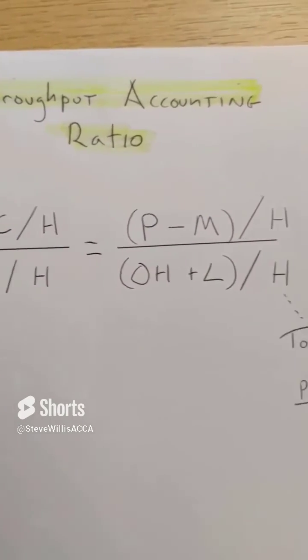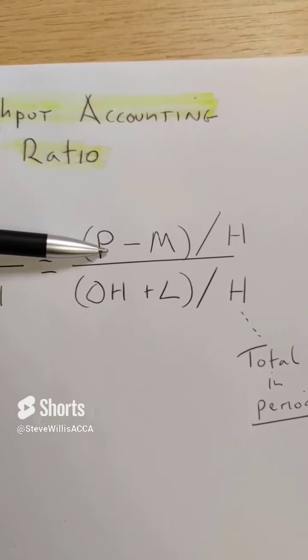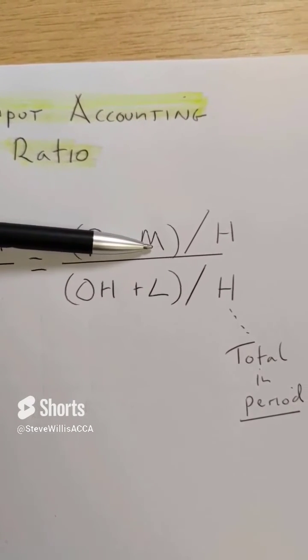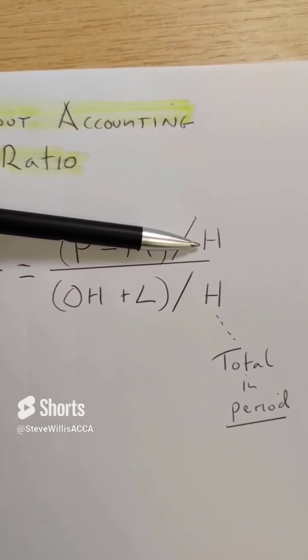I write down this, then I break it down further. Throughput contribution is price minus direct materials, so I've got to find these two variables in the question, divided by hours on the bottleneck resource.